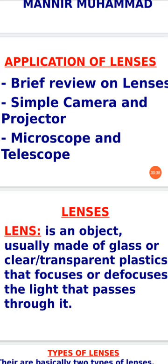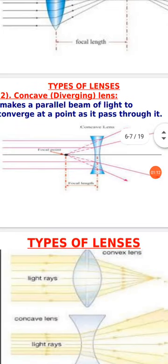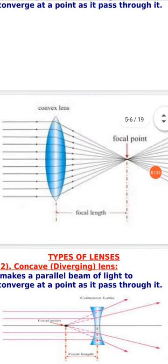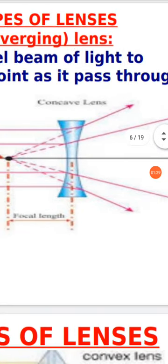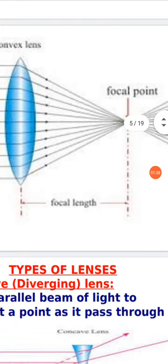What is a lens? A lens is an object usually made of glass or clear transparent plastic that focuses or defocuses the light that passes through it. You can see rays of light inciding on a convex lens, which makes the light rays converge at a point — this is focusing. In the other case, rays of light incident on a concave lens will spread out and diverge — this is defocusing.